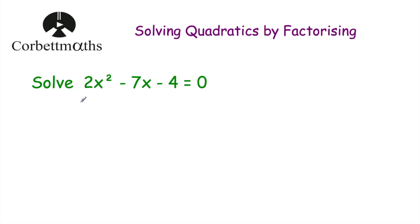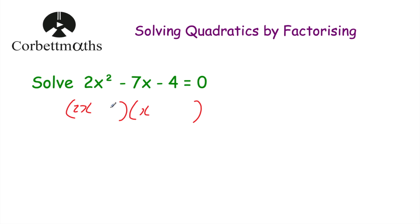We've got 2x², so I'm going to open up the brackets and put 2x in one bracket and x in another, because 2x × x = 2x². To find the numbers in the brackets, we want two numbers that multiply to be -4. Because we've got 2x and x rather than just x and x, we need to expand the brackets mentally and check which numbers give us -7x in the middle. I'm thinking if we put -4 and +1: 1 × -4 = -4.